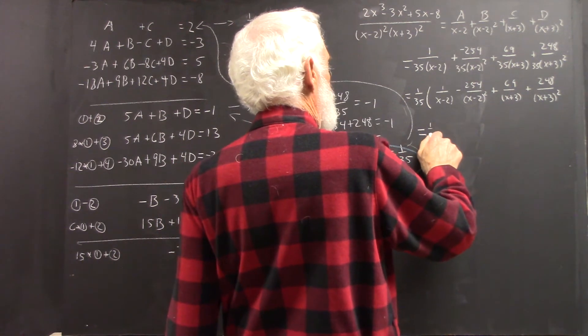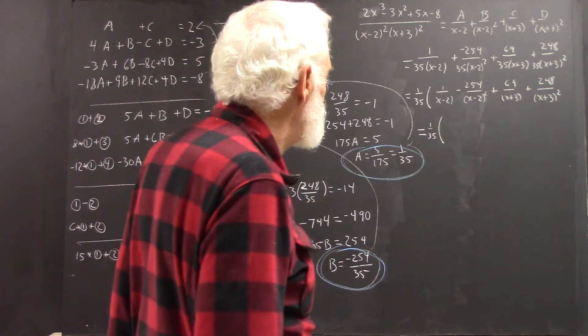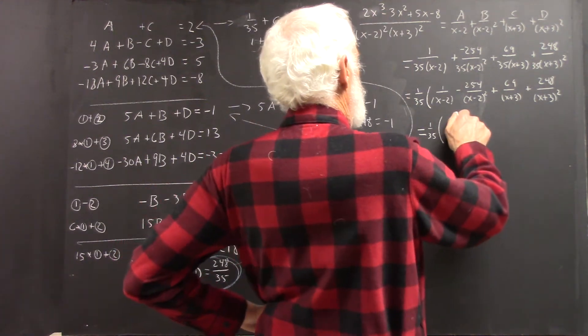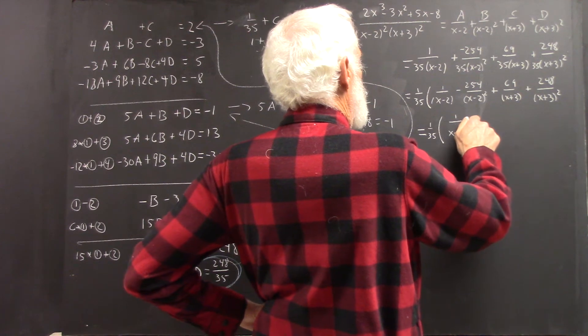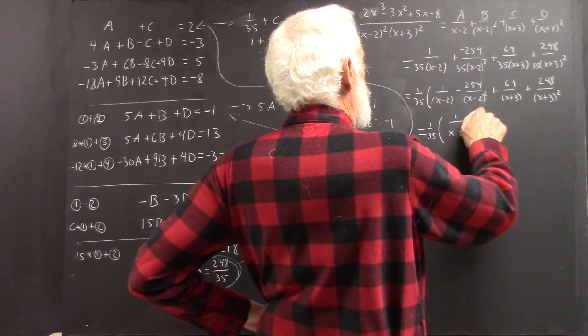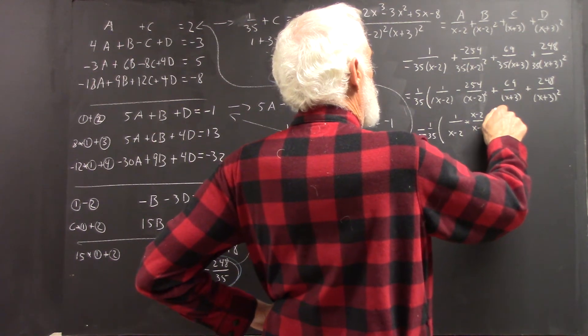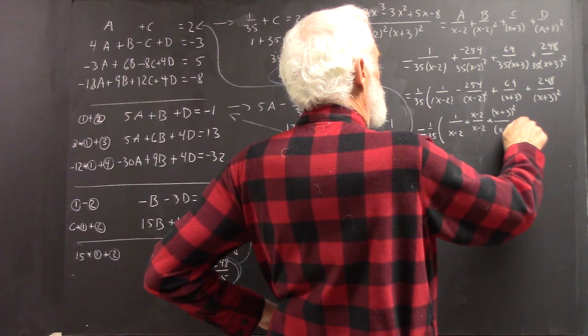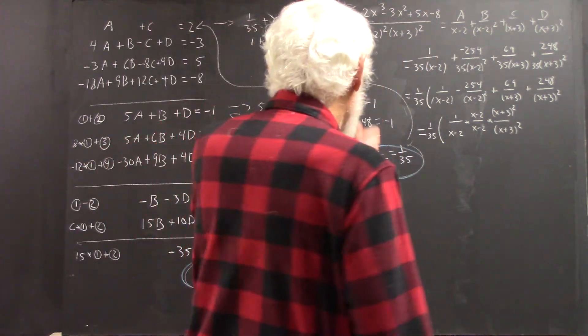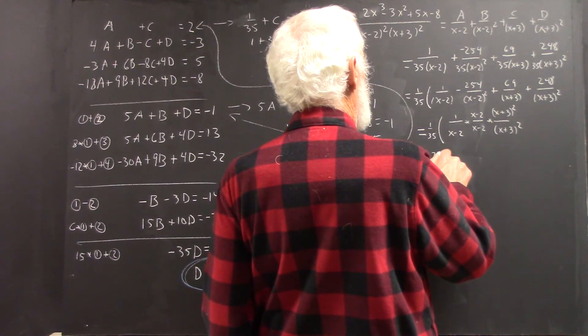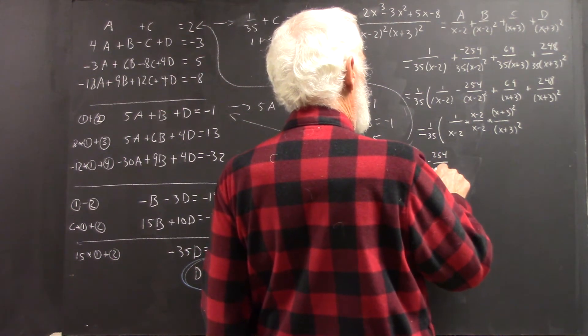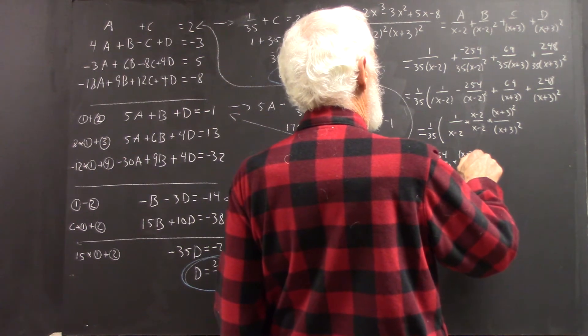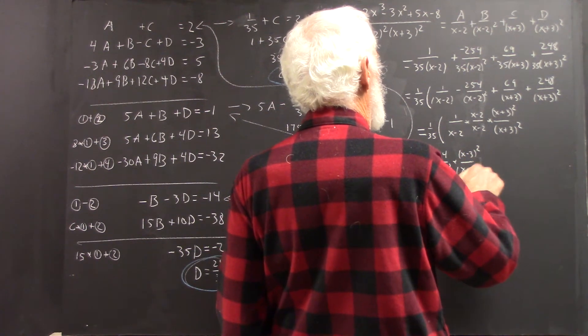So, let's say that's 1 over 35 times. Now, again, we're going to have to write out all the terms. I'm going to have 1 over X minus 2 times X minus 2 over X minus 2 times X plus 3 quantity squared over X plus 3 quantity squared. And then I'm going to have minus 254 over X minus 2 quantity squared times X minus 3 quantity squared over X minus 3 quantity squared.